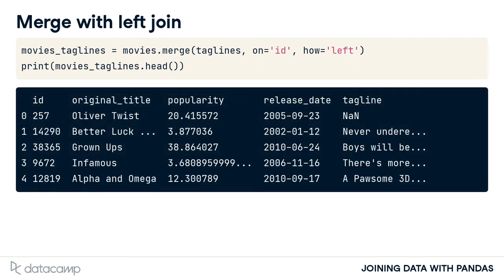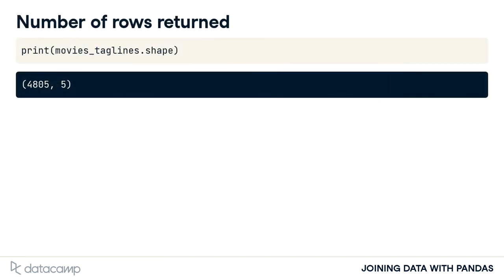The result of the merge shows a table with all of the rows from the Movies table and a value for tagline where the ID column matches in both tables. Whenever there isn't a matching ID in the Taglines table, a null value is entered for the tagline. Remember that Pandas uses NaN to denote missing data. After the merge, our resulting table has 4,805 rows. This is because we are returning all of the rows of data from the Movies table, and the relationship between the Movies table and Taglines is one-to-one. Therefore, in a one-to-one merge like this one, a left join will always return the same number of rows as the left table.